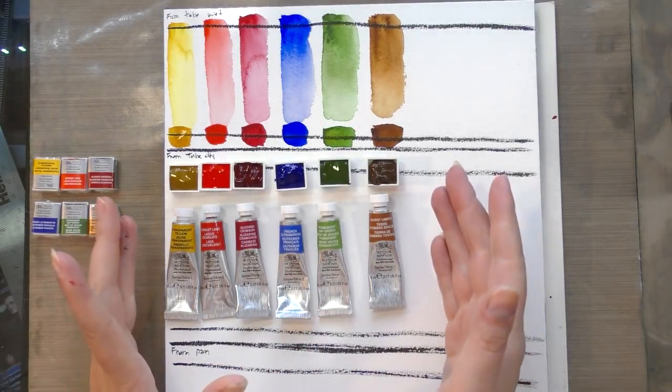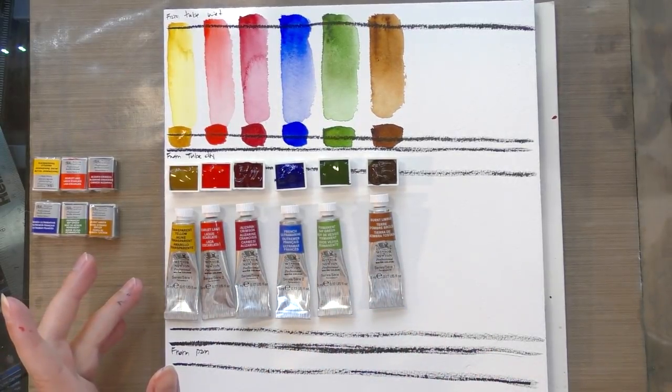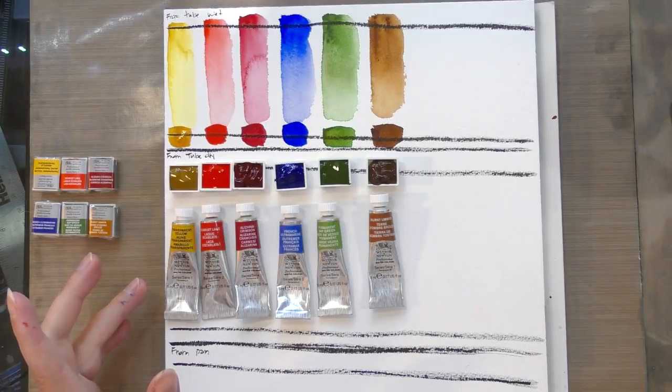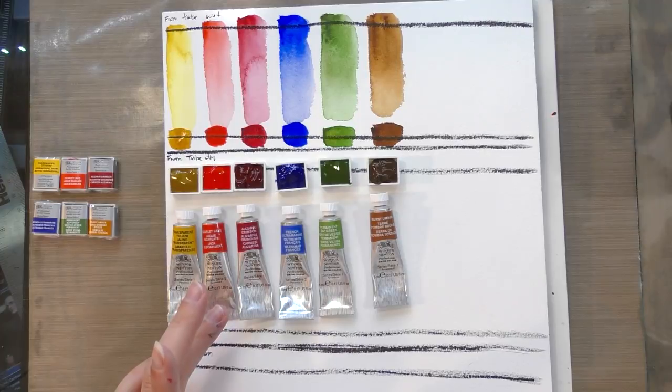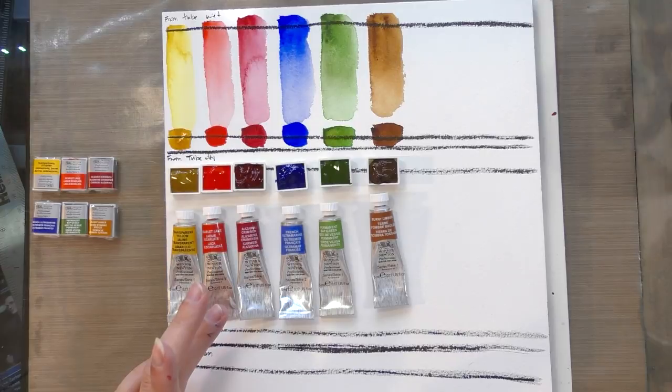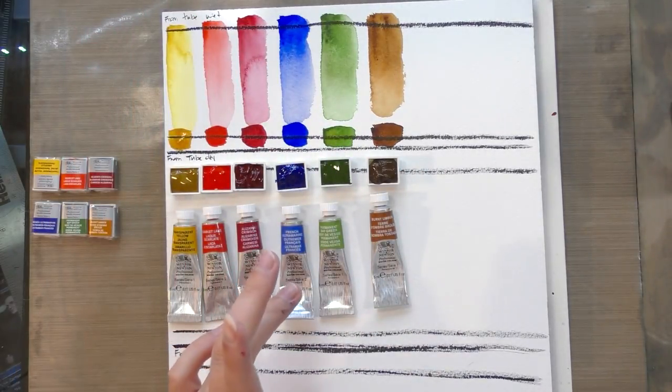I also went ahead and I filled my half pans. I filled them up as far as they would go and even tapped them down. We're going to see how much shrinking occurs as they dry out. But the pigments used in these are from left to right, transparent yellow, PY 150. It's a series one color. It is transparent and it has a light fastness of one. Scarlet lake, it is PR 188. It is a series two color. It is semi-transparent and has a light fastness of two. It is the only one here that has a two light fastness.